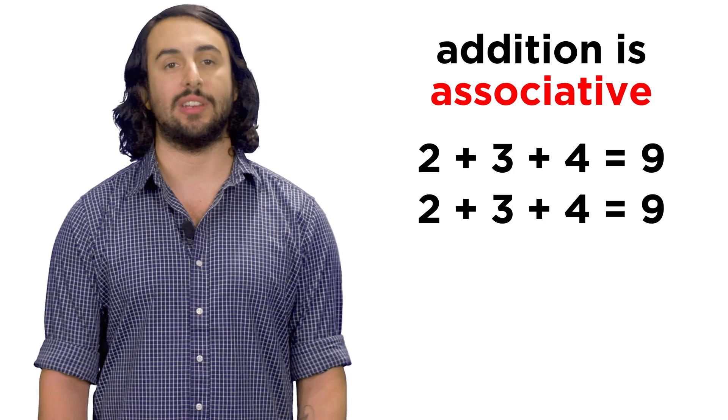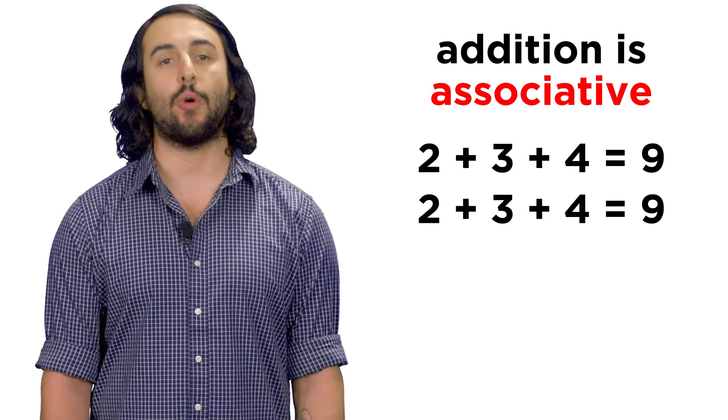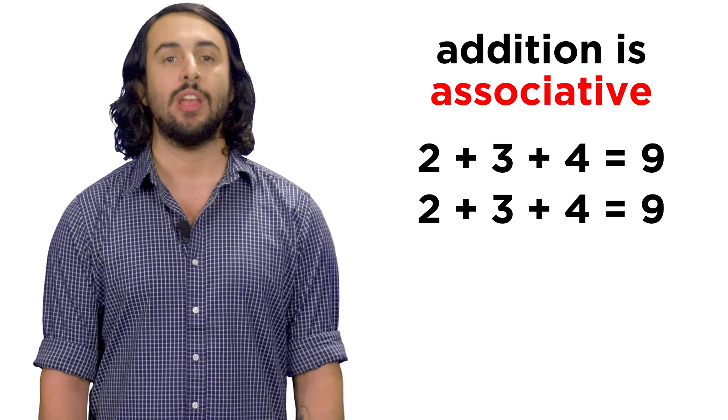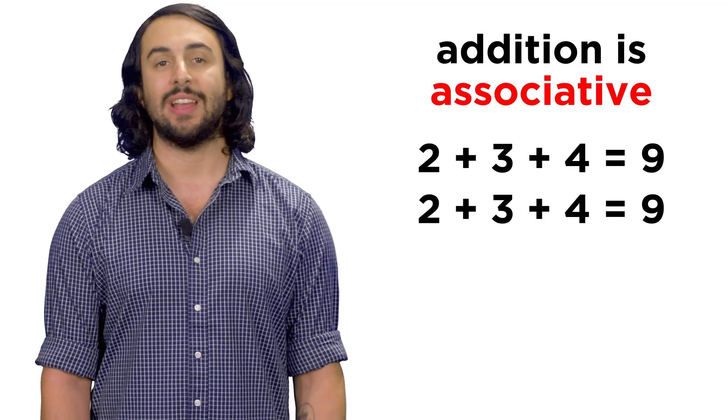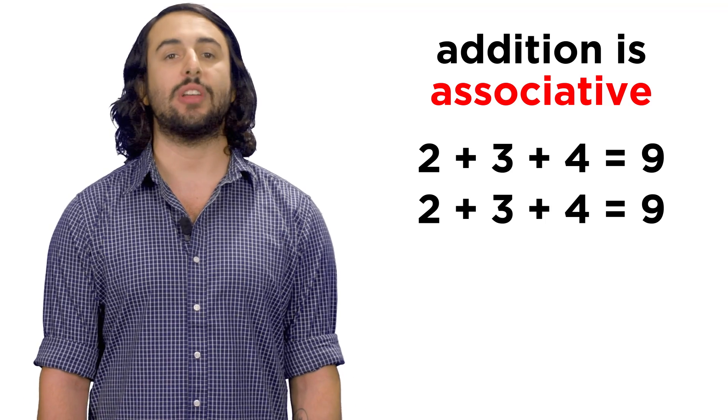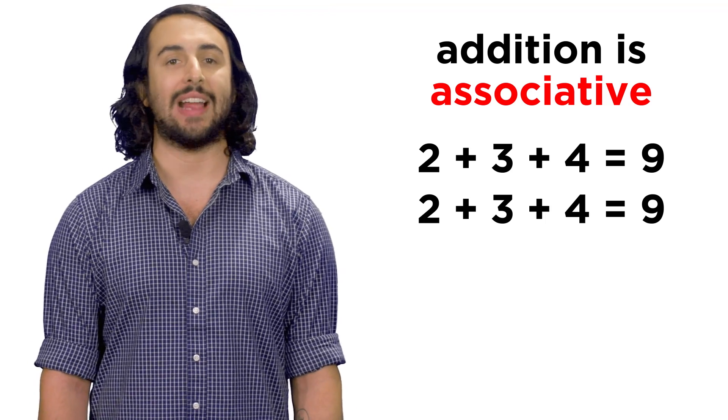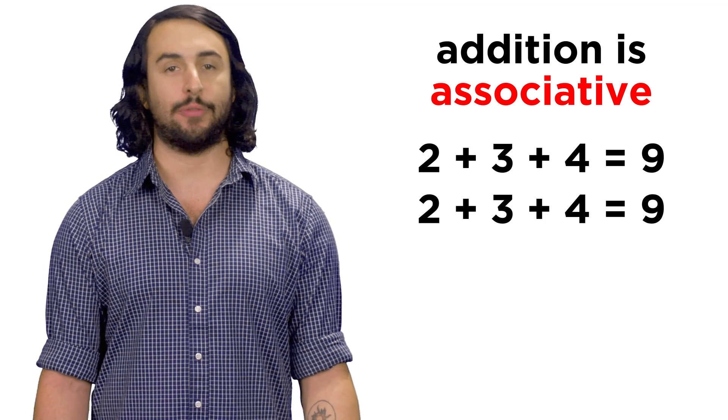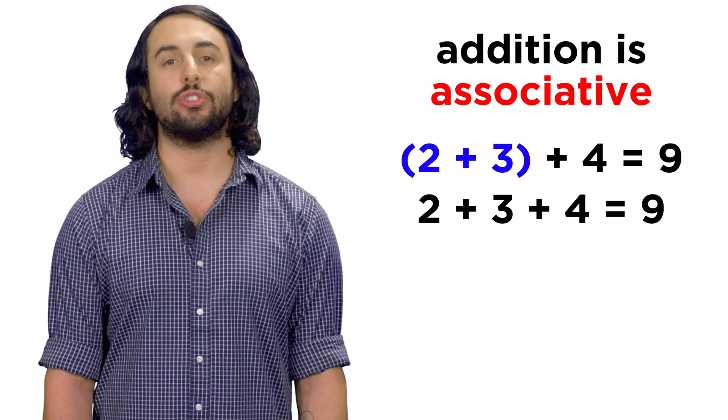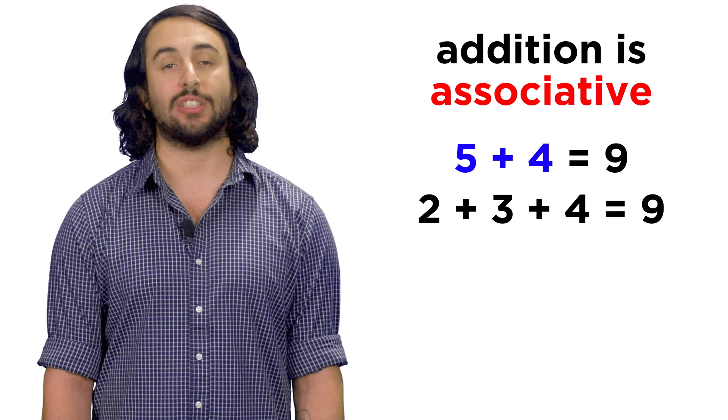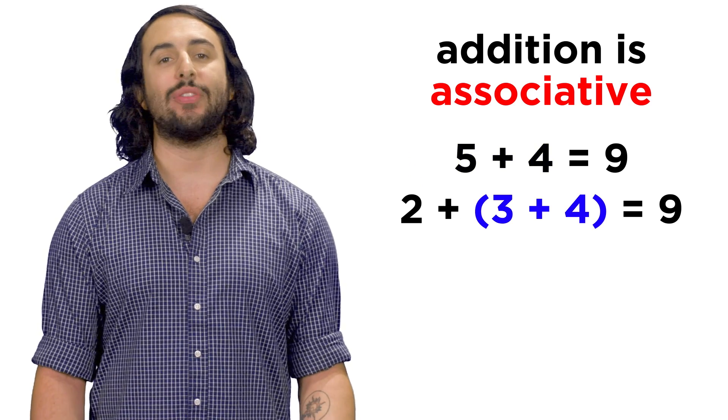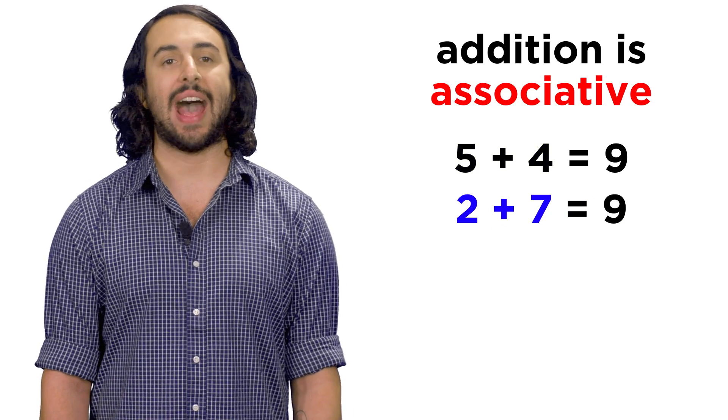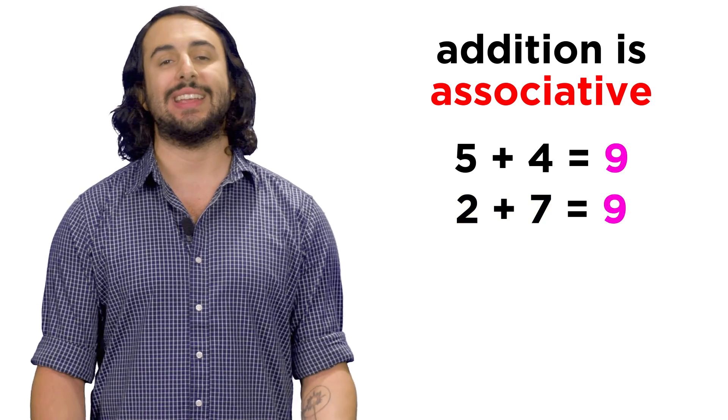Addition is also associative. This means that if performing two successive additions, the order in which they are performed does not matter. Two plus three plus four will be nine, no matter which numbers we add first. We can add the first two to get five, and then add that to four, or we can add the latter two to get seven, and then add that to two. The result is the same.